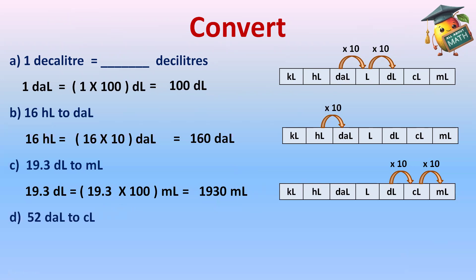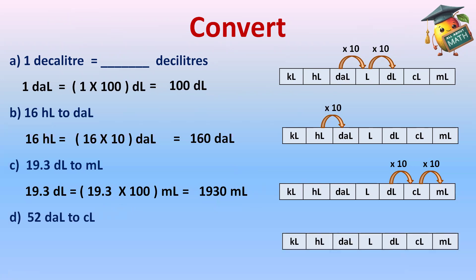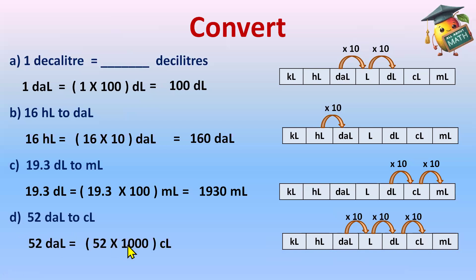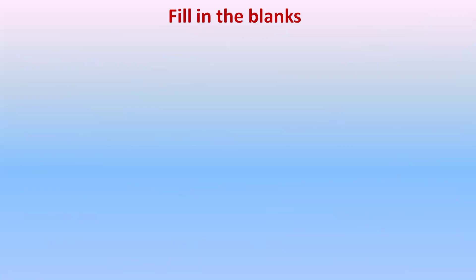Part D: we have 52 decaliters to centiliters. Make the chart again. From decaliters to centiliters: first step, decaliters to liters; then liters to deciliters; then deciliters to centiliters — three jumps, moving forward, so multiply by 10 each step. Three tens means multiply by 1000. So 52 decaliters equals 52 × 1000 centiliters, which is 52,000 centiliters.